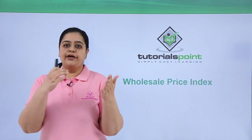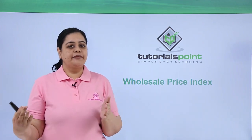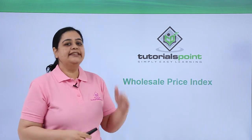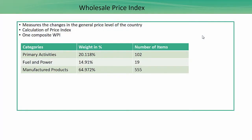Let us now understand how the Wholesale Price Index is computed through an example and what is the significance of WPI. The Wholesale Price Index measures the changes in the general price level of the country. This index is calculated mainly on the basis of commodities traded at wholesale rates — for example, oil, sugar, wheat, rice, etc. Generally, the service sector gets ignored in this index.